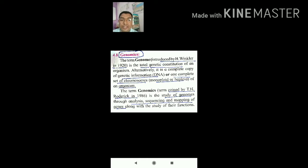It is a complete copy of genetic information about DNA, or one complete set of chromosomes that is monoploid or haploid. The term genomics was coined by T.H. Roderick in the year 1986. The study of genomes through.